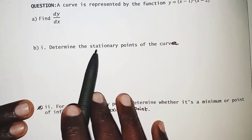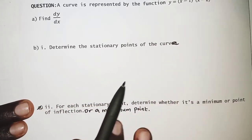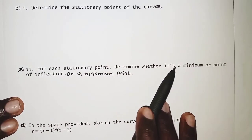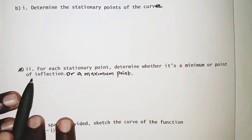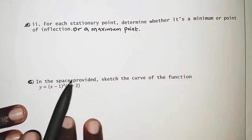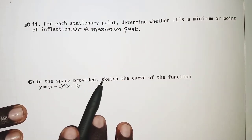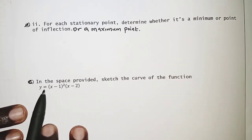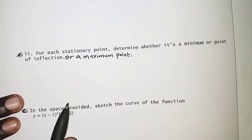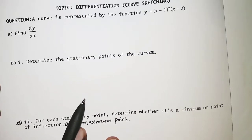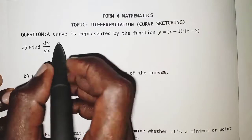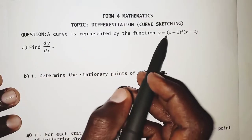Part b(i): determine the stationary points of the curve. Part b(ii): for each stationary point, determine whether it's a minimum, a point of inflection, or a maximum point. Lastly, in the space provided, sketch the curve of the function y = (x − 1)²(x − 2). So for part a, we are required to get the derivative of this function.